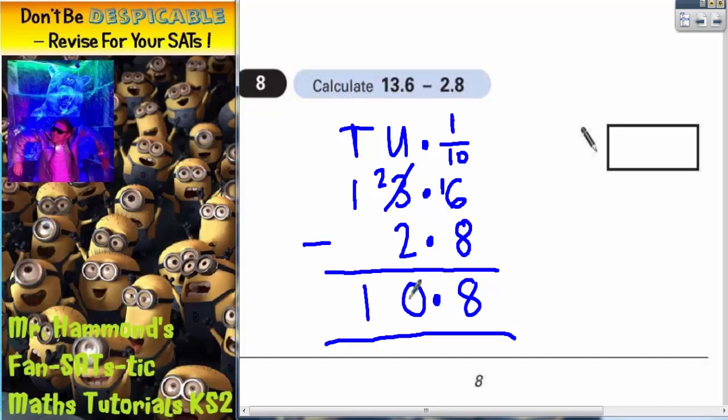So the final answer is ten point eight. Being careful with the column methods and you'll get all the marks there. Ten point eight.